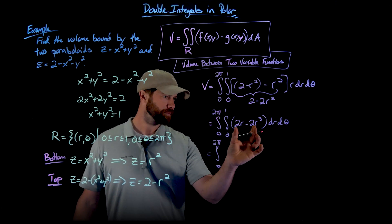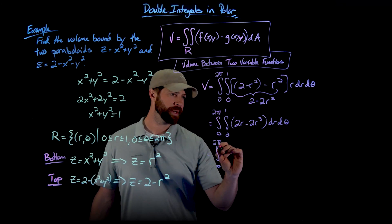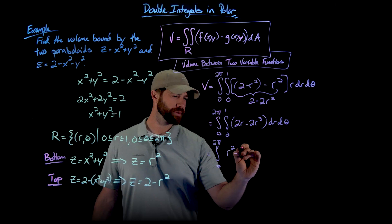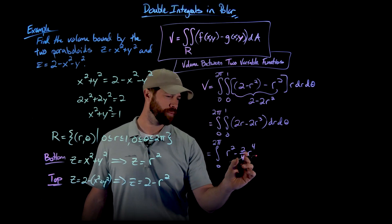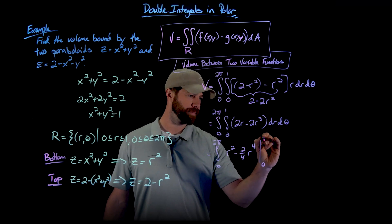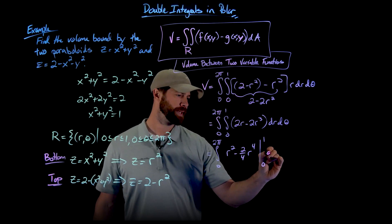0 to 2 pi. Let's take the integral here. This will be r squared. And this would be 2 fourths r to the fourth or 1 half r to the fourth. And we're going to evaluate that from 0 to 1 d theta.